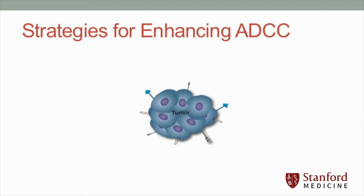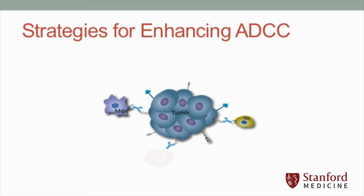ADCC is initiated by the binding of a monoclonal antibody to the tumor-associated antigen. The FC portion of the antibody then becomes a target for FC receptors on the surface of effector cells. Natural killer cells, macrophages, and recently gamma-delta T cells have all been found to play a role as ADCC effectors.